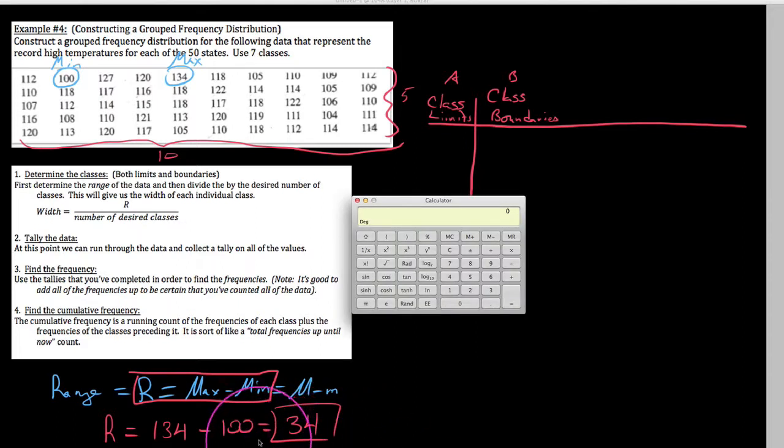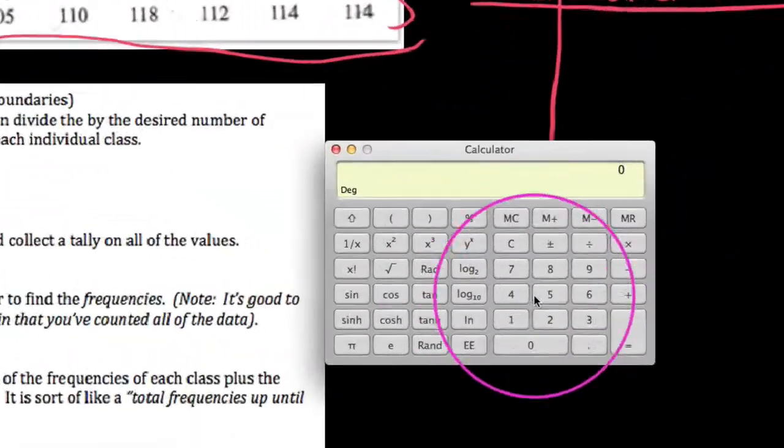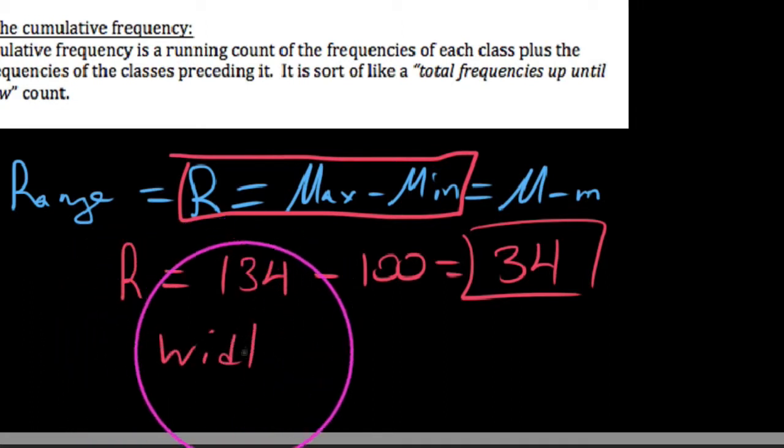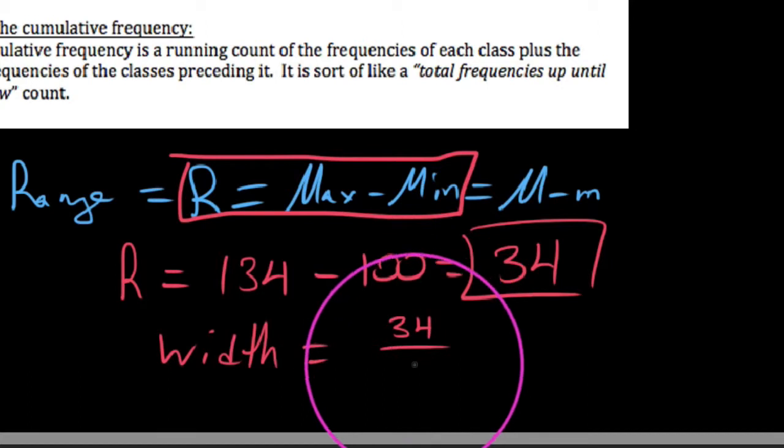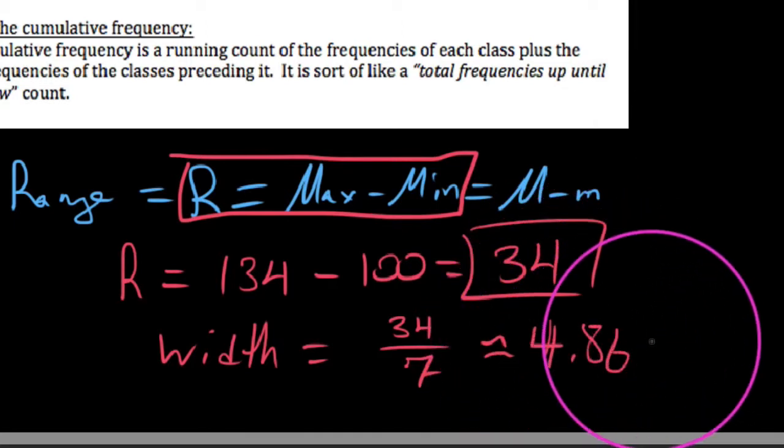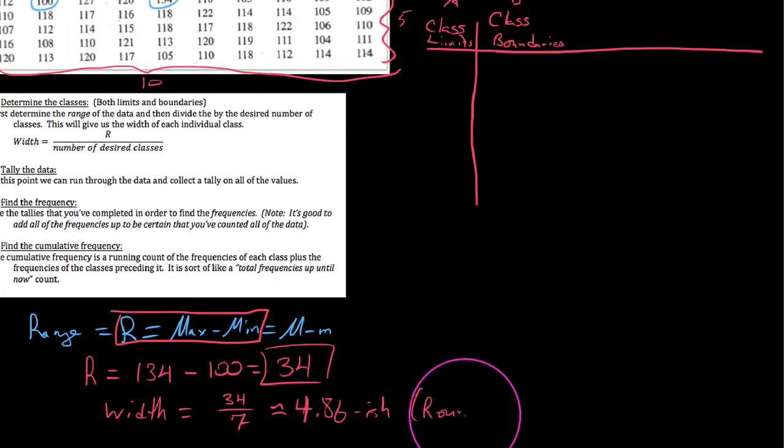Since we want seven classes, we need to figure out how wide should each class be so that we go from 100 up to 134 evenly spaced but cover seven different classes. We're going to take the range and divide by the desired number of classes. We take that 34, divide by seven. Width equals 34 divided by seven classes, approximately 4.86-ish degrees.